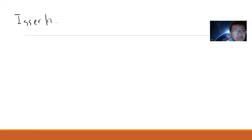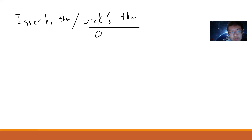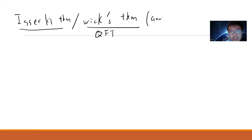In this video, I want to talk about a theorem which is very simple but I haven't made a video about it. It's called Isserlis' Theorem, and another name which should be much more famous is Wick's Theorem — if you know quantum field theory. It's also related to so-called Gaussian Boson sampling, and there's a function called the Hafnian.